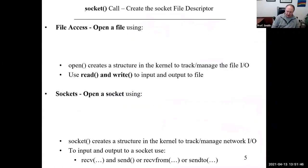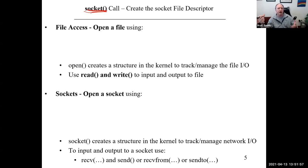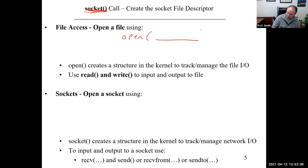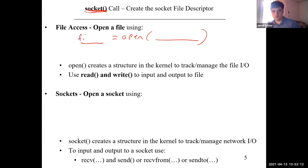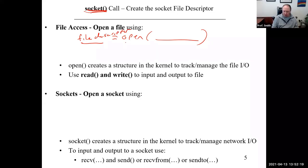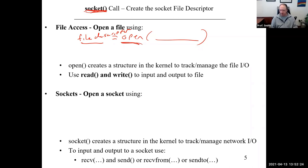The first function we're going to look at is the socket function. When the Berkeley people were thinking about this, they said: what abstraction do we already know? We already know how to do file I/O. When we do file I/O, we call open, and it returns a file descriptor. Now — open is a system call, socket is a system call. Almost all system calls return less than zero on error.